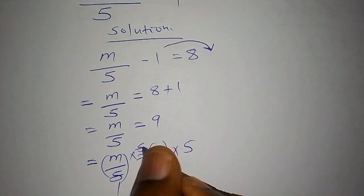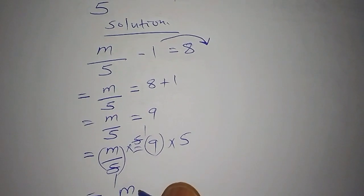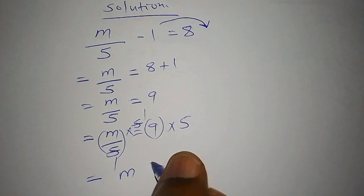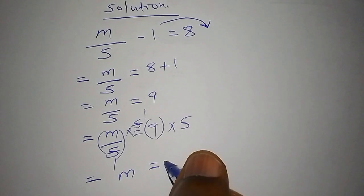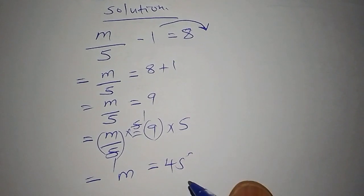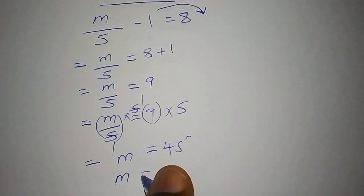When done that way now we shall say that 5 here cancels 5 here, and m is now equals to 9 multiply by 5. 9 multiply by 5, the answer is 45. So our final answer says that m now equals 45.